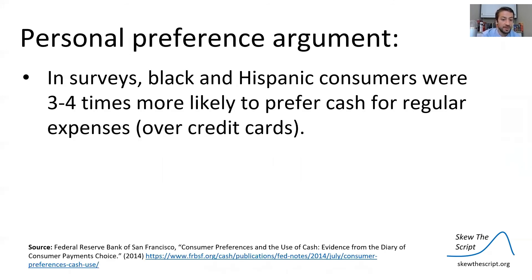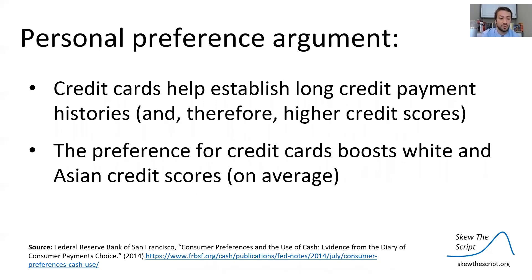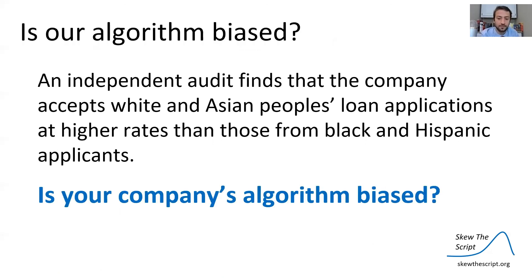There's also a personal preference argument. In surveys, black and Hispanic consumers were three to four times more likely to prefer cash for regular expenses over credit cards, whereas Asian and white consumers tended to prefer credit cards over cash. Credit cards help establish long-term credit histories and therefore lead to higher credit scores, so the preference for credit cards boosts white and Asian credit scores on average.